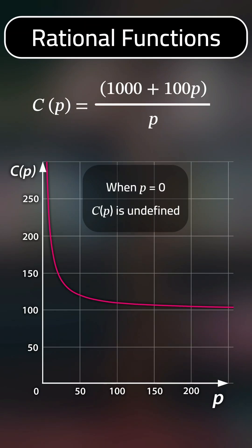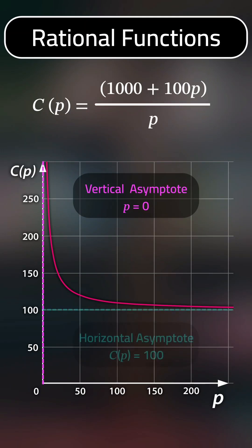The graph also exhibits two asymptotes: a vertical one where the number of people is zero, and a horizontal one where the cost per person approaches $100 but never quite reaches it.